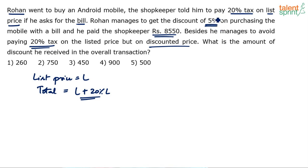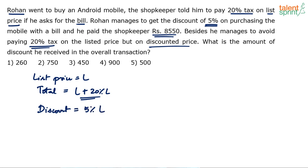What do we mean by discounted price? He's got a 5% discount, so he's paid 95% of the listed value, and he has paid tax on that 95% of the listed value, not on 100% of the listed value. In the actual scenario, he has to pay L rupees plus 20% tax on the list price, but he got a discount of 5% on the list price — so 5% on the list price is the discount.